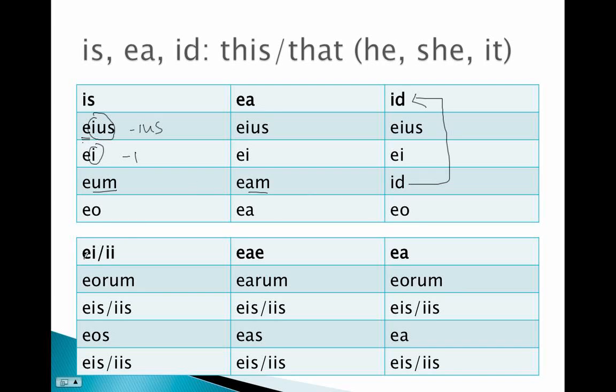And then in the plural, ei, eae, ea. We've got our e stem with our regular first and second declension endings.